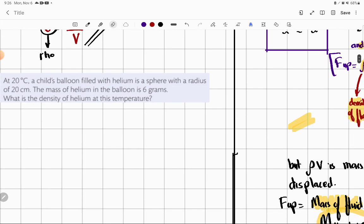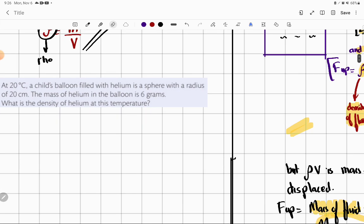Now let's see. So at 20 degrees Celsius, a child's balloon filled with helium is a sphere with a radius of 20 centimeter. Be careful, here is a radius given here. I will also write that radius is 20 centimeter, or I will also write it as 0.2 meters.